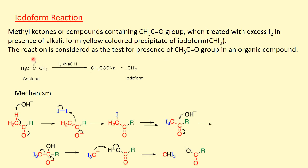Now see acetone: CH3–C(=O)–CH3. It contains the CH3CO group. When treated with iodine in the presence of alkali, it gives iodoform CHI3 and sodium acetate.